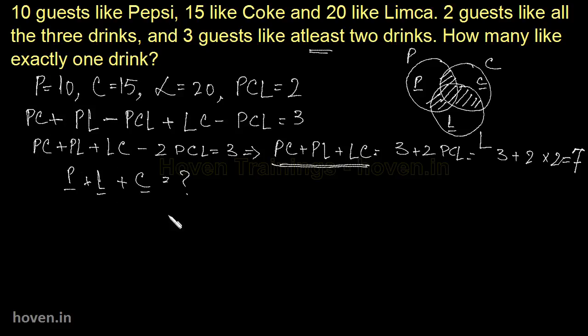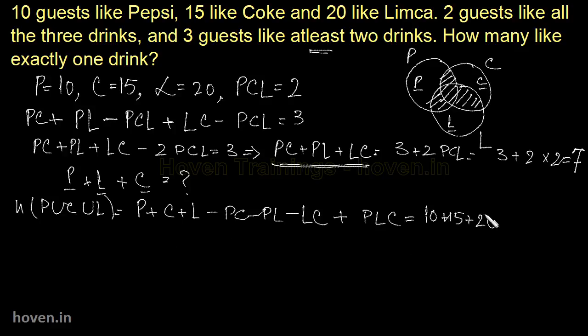So let us start by using our first Venn equation. So what does it state? N(P union C union L) is equal to P plus C plus L minus PC minus PL minus LC plus PLC. This we already know. And so we can put 10, 15, 20. 10 plus 15 plus 20 minus the sum of PC, PL and LC, so this will be minus 7. And add PLC, PLC is 2. So this gives us 30, 45, 47, this gives me 40.